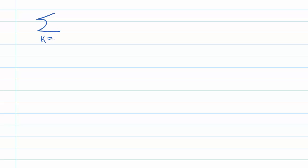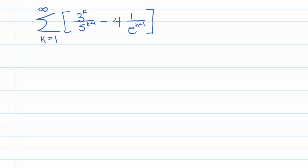Let's practice using some of the properties of infinite series. First, let's look at the sum k goes from 1 to infinity of 3 to the k over 5 to the k plus 1, minus 4 times 1 over e to the k plus 1. Now the first thing we're going to consider is whether we can split the sum over this minus sign. We can only split it if both of the sums converge, so we're going to have to look at each sum first.